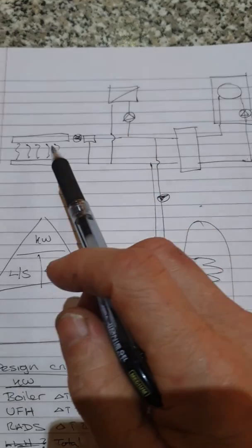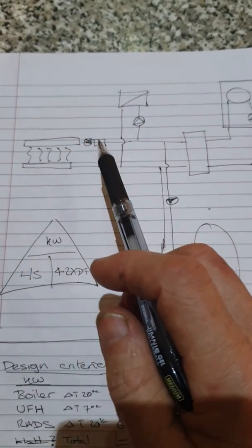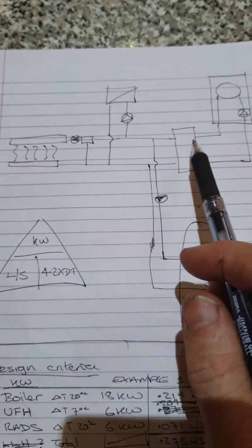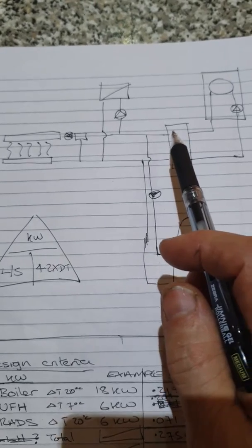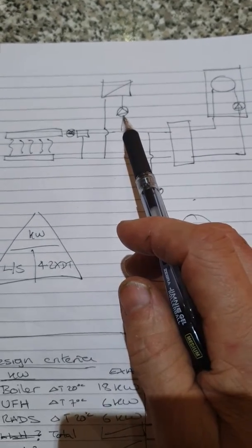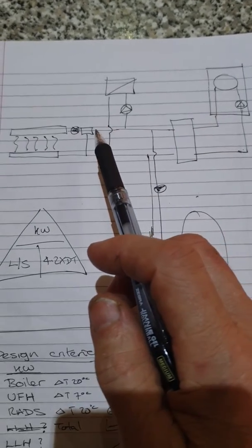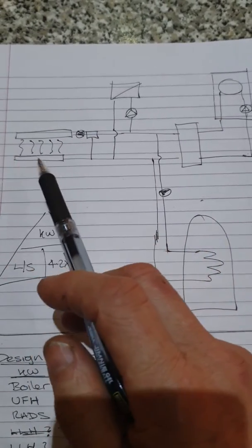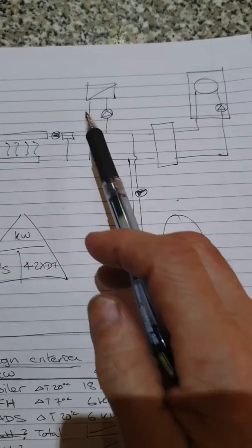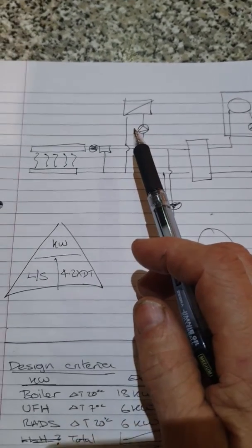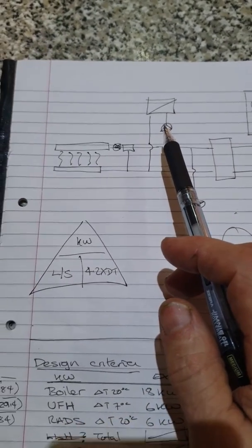Without the low loss header and this pump, the boiler will deliver 20 liters a minute straight to the underfloor heating manifold and straight back up the return, and the radiators will get no heat. I see this very often.